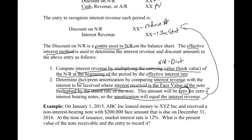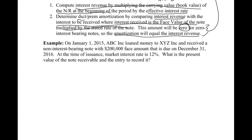Here's our example: a company loans money to another company and receives a non-interest-bearing note with a $200,000 face value due on December 31st. The market rate — also called the effective rate — at the time is 12%. Notice this is not a stated rate because there is no interest rate on the note itself, meaning there's no cash payment for interest. The interest is implied in the note.